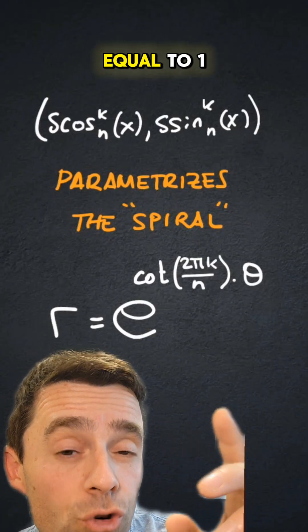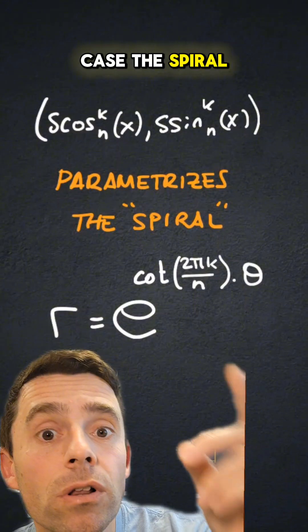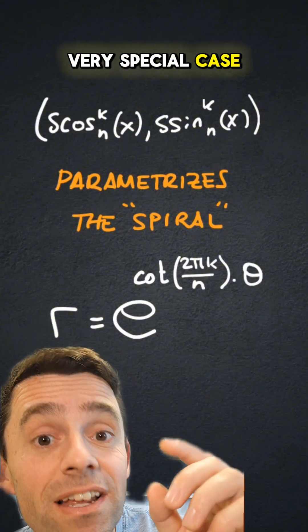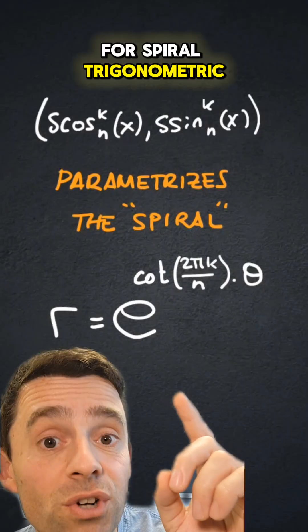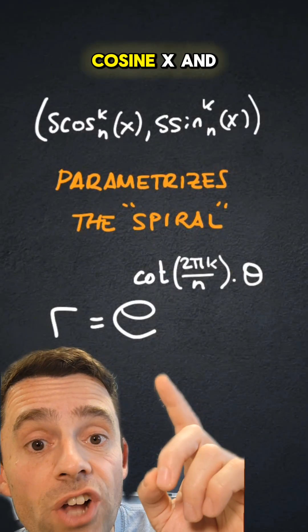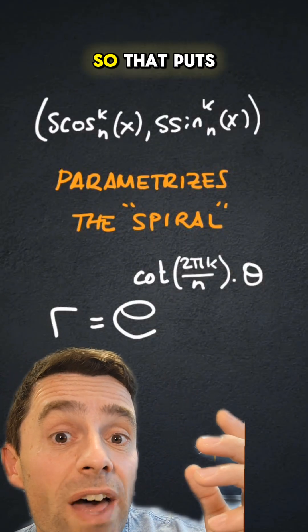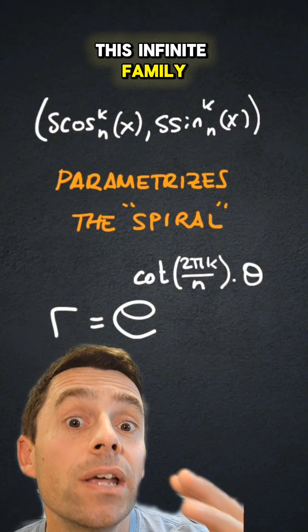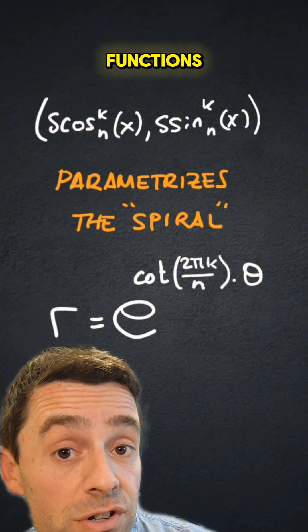And notice that in the case of n equals 4, the cotangent is exactly 0, and that gives me that the radius is constant equal to 1. So in that case the spiral is a circle of radius 1, and in that very special case what we get for spiral trigonometric functions are the usual cosine x and sine of x. So that puts cosine x and sine of x as one member of this infinite family of spiral trigonometric functions.